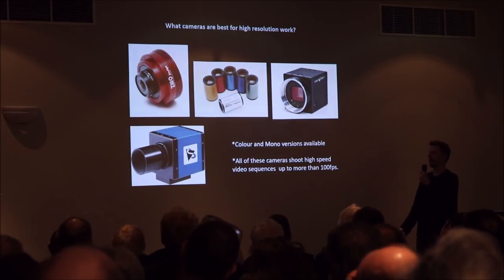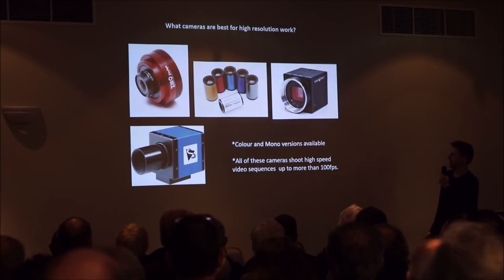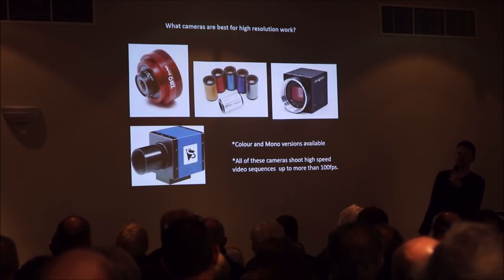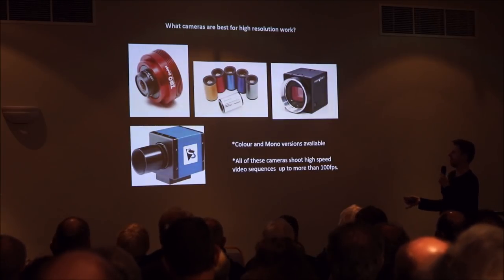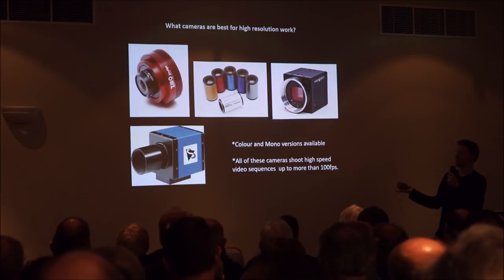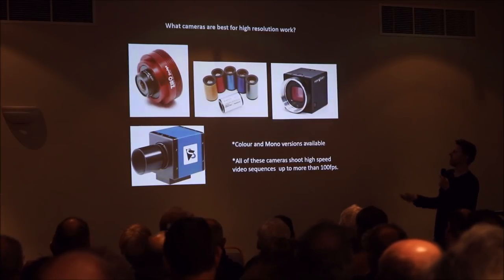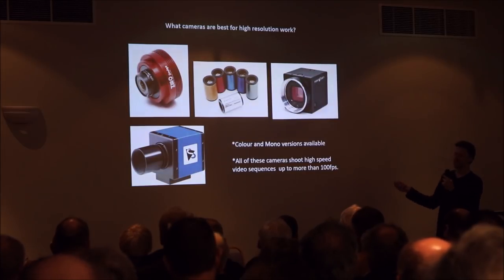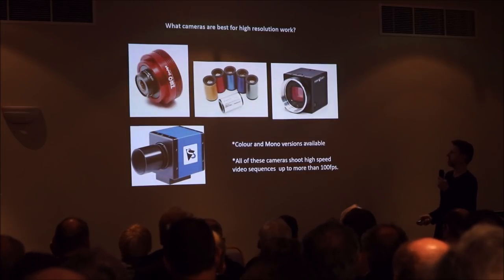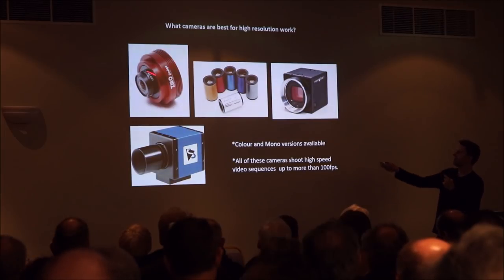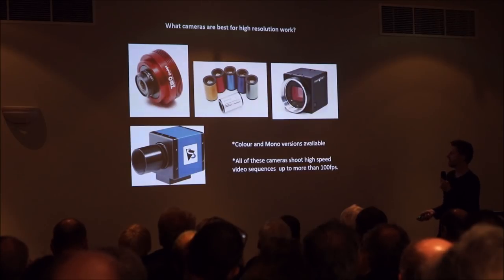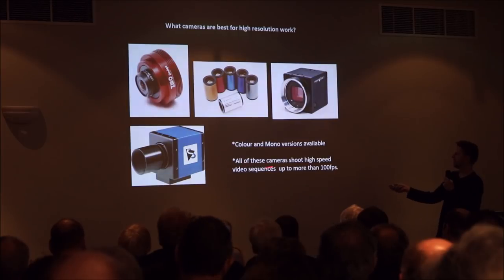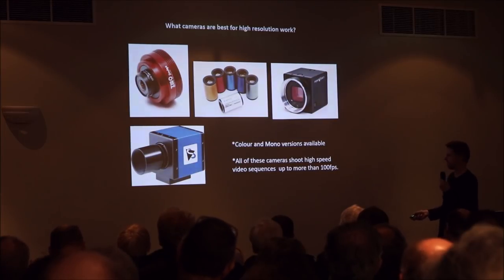We're fortunate today to have a whole range of imaging cameras available. With high resolution imaging, these are quite different from your conventional camera — they're not digital SLRs. What we're talking about here are high speed video cameras operated via a USB cable plugged into a computer, which basically take the place of the eyepiece of the telescope. There are various manufacturers, and you can get color or mono versions. They all essentially shoot high-speed video sequences.